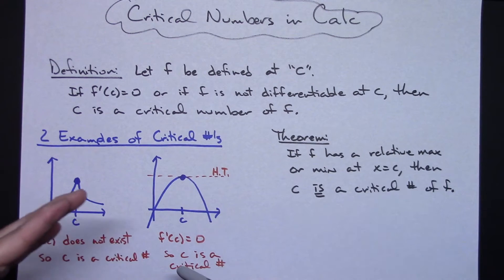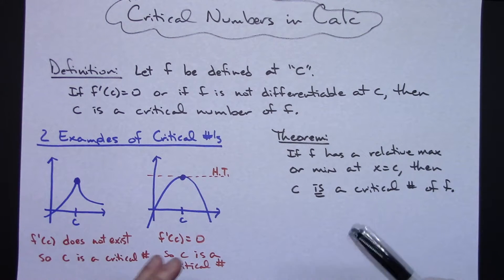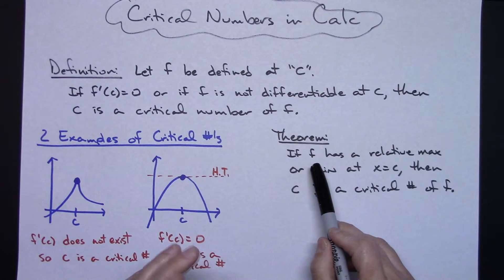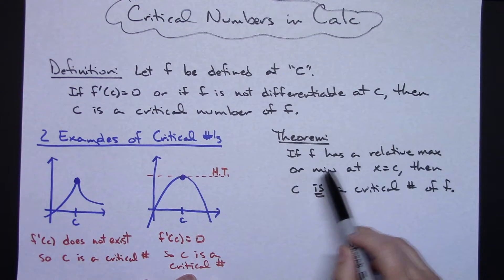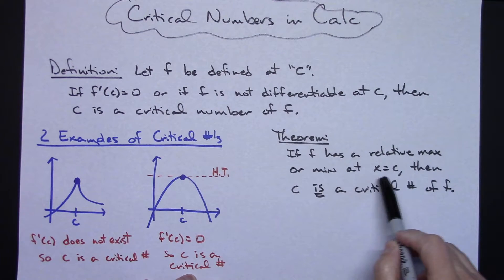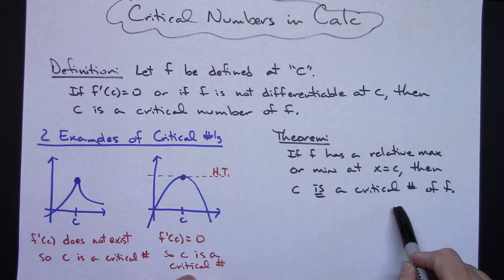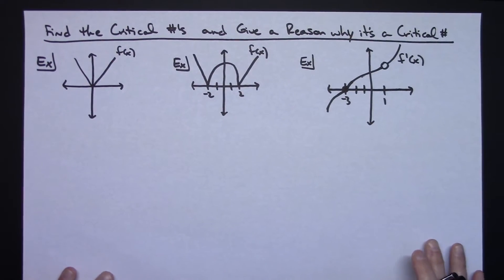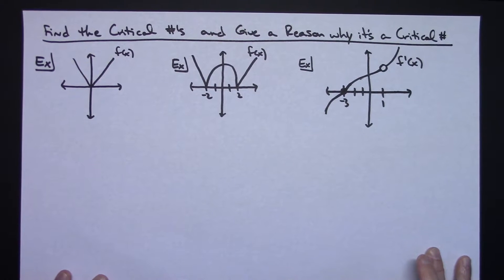So some things that you're looking for on the original function. There's a theorem that goes along with this: if F, the original function, has a relative max or min at X equals C, then C is a critical number of F. So you know it's going to be occurring at your maxes and mins. Critical numbers also occur where the derivative doesn't exist. So now let's take this definition and, as opposed to algebraically applying it, let's apply it to some graphs.